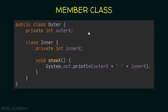Now let's see another example. The outer class has a private integer called outerX, and inside it we are declaring the inner class with a private integer innerX and a method called showX. Inside showX, we print outerX concatenated with innerX. As you can see, the inner class can access outerX even though it is a private variable — member classes can access the private members of the outer class.